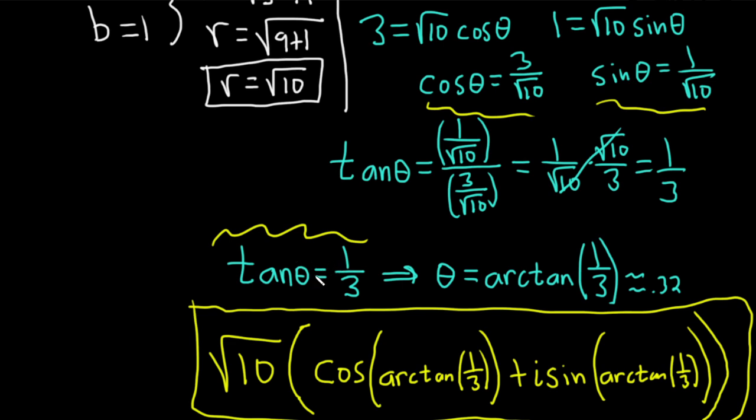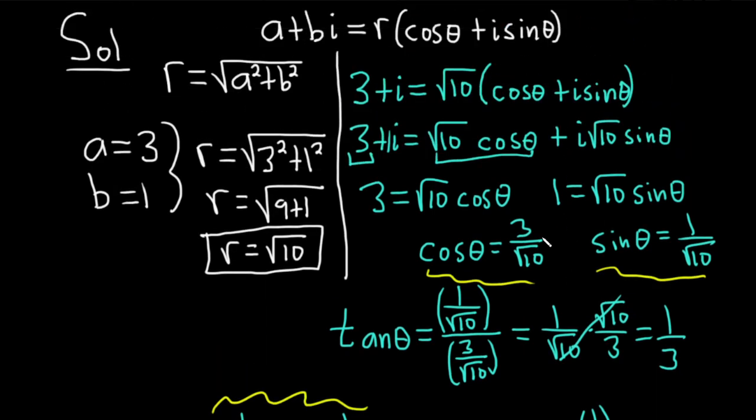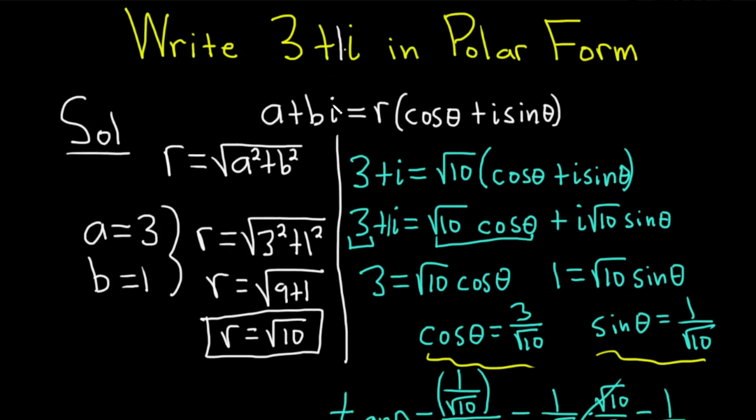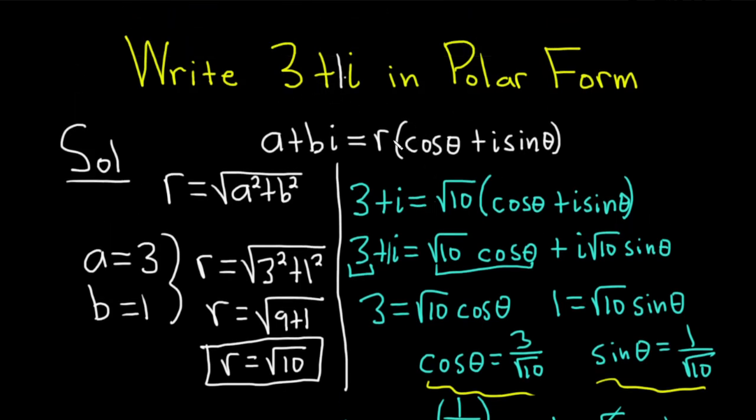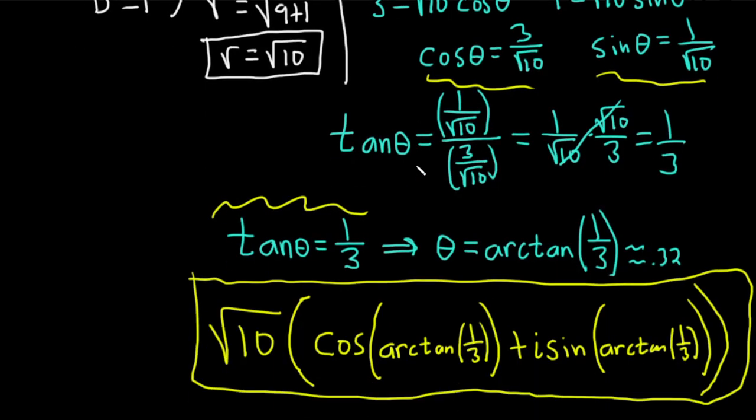And by the way, this answer makes sense. Everything here is in quadrant 1. Remember, on the unit circle, cosine is the x-coordinate, sine is the y-coordinate. We're good, we're in quadrant 1, and that makes sense because 3 plus i is also in quadrant 1. So all is okay, we're in quadrant 1 and everything is good.